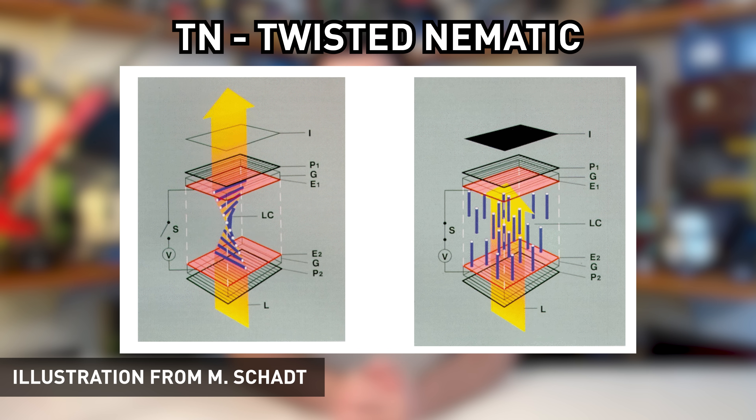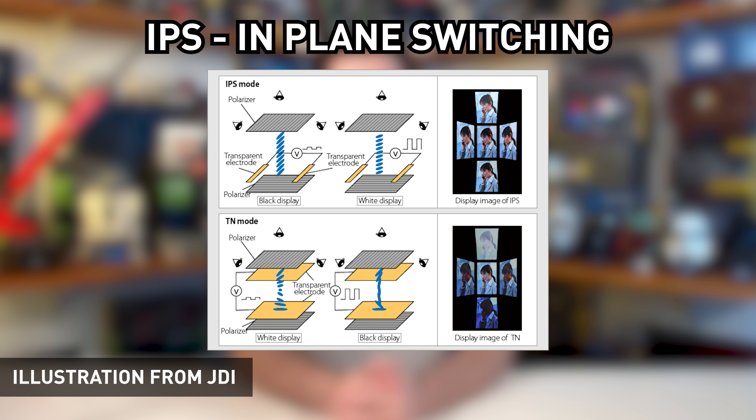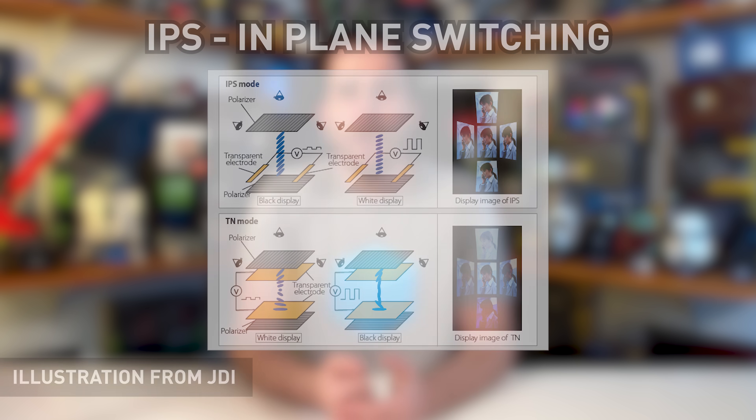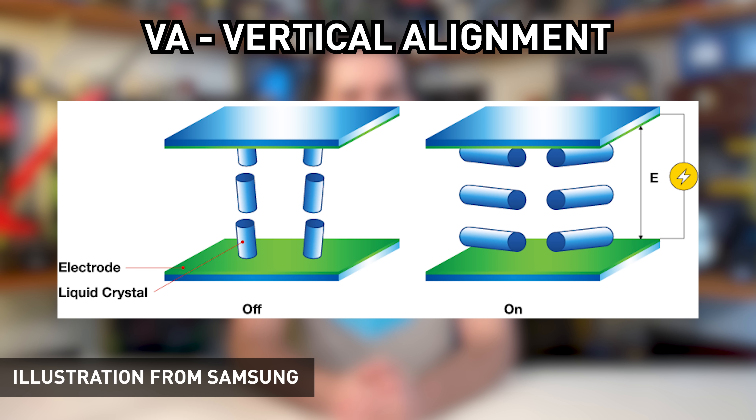TN stands for Twisted Nematic. With this technology, crystals are twisted to block light and then untwisted 90 degrees to allow light to pass through. IPS stands for In-Plane Switching — the crystals are aligned parallel to the glass substrate and rotate to let light pass. VA stands for Vertical Alignment, where crystals are aligned vertically and tilt to let light pass. So TNs twist, IPS rotate, and VAs tilt. There are several sub-variants and different brand names: AU Optronics uses AHVA for an IPS-type panel, Samsung uses PLS, while LG simply uses IPS. On the VA side, we have AU Optronics' AMVA and Samsung's SVA, among others.